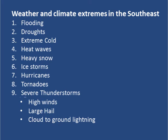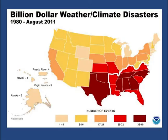Just listing the extremes we see here in the Southeast — it's about A to Z, just about anything you can think of: flooding, droughts, extreme cold, heat waves, heavy snow, ice storms, of course hurricanes, tornadoes, severe storms, high winds, large hail, and also frequent cloud-to-ground lightning.